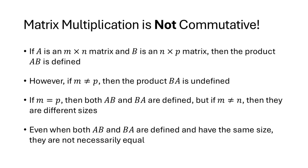Even if M and P are equal, if M and N are different numbers, then AB and BA will both be defined but will be different sizes: AB would be m by m, but BA would be n by n. If M and N are different, those can't be the same matrix because they're not even the same size. And even when AB and BA are both defined and have the same size, they still aren't necessarily equal to each other.